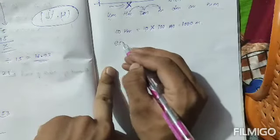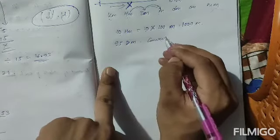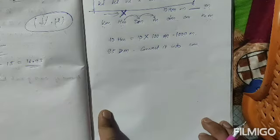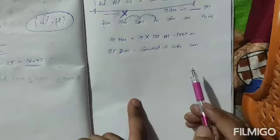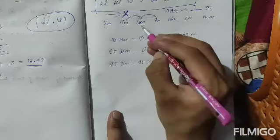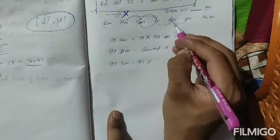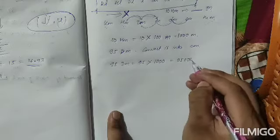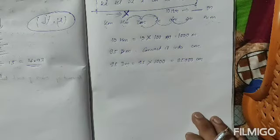One more example: convert 95 decameters into centimeters. Again we are moving from left to right. From decameter to centimeter is three steps, so multiply by 1000 (one and three zeros). Therefore 95 × 1000 = 95,000 centimeters. So 95 decameters equals 95,000 centimeters.